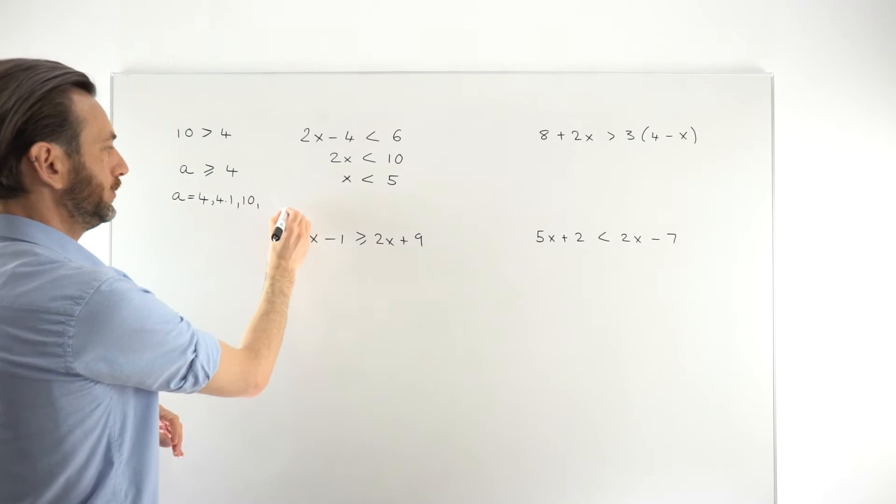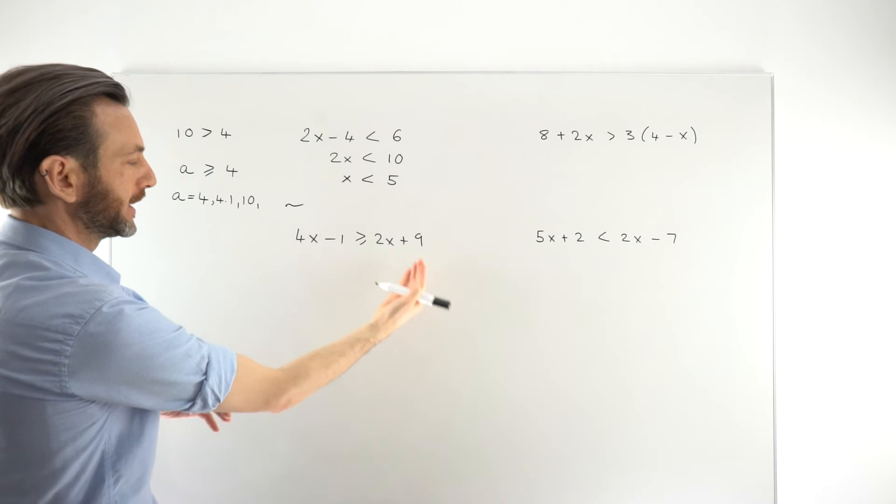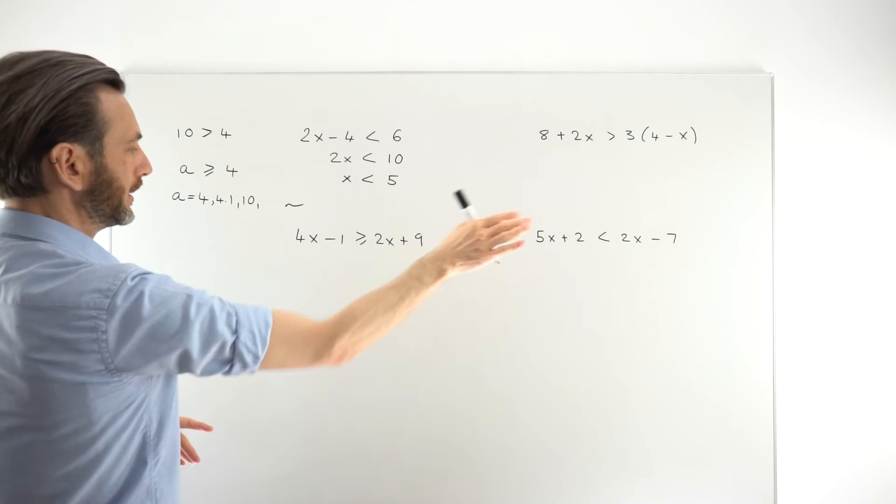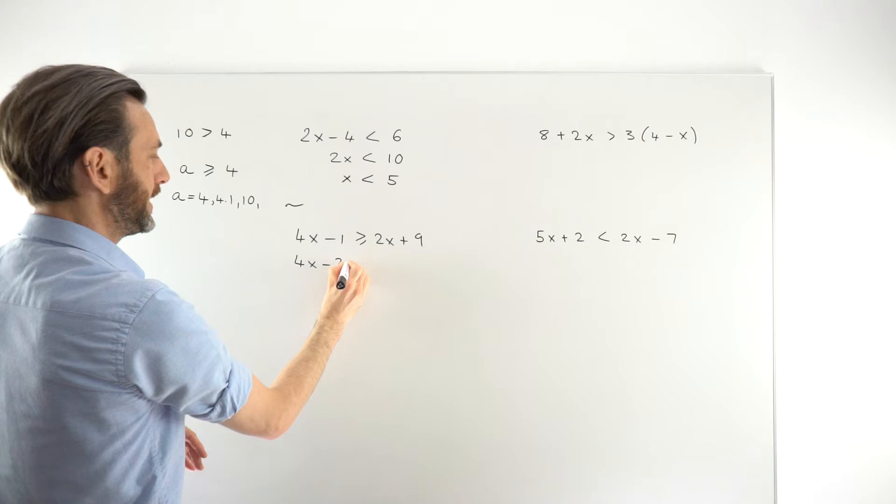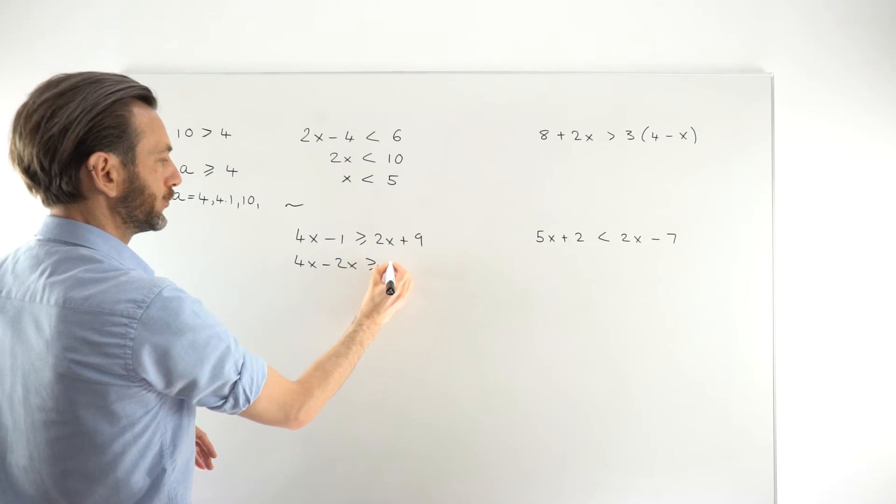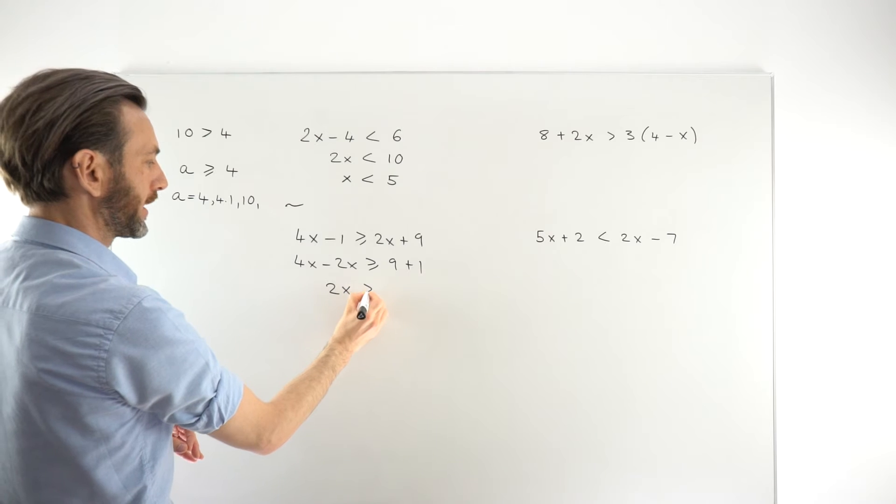So moving on to the second example. A little bit more work to do here. We've got more terms. We're going to take the x terms to the left and the number terms to the right. So we would end up with 4x minus 2x is greater than or equal to 9 plus 1, combining those together to get positive 2x.